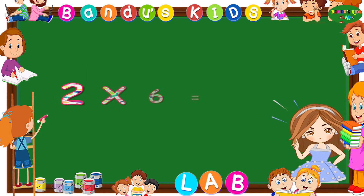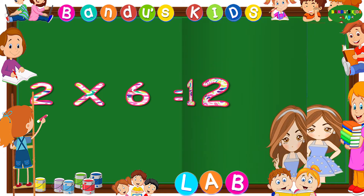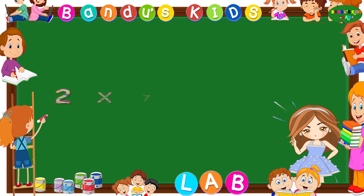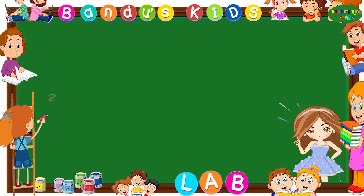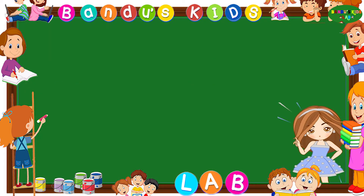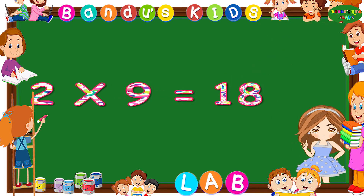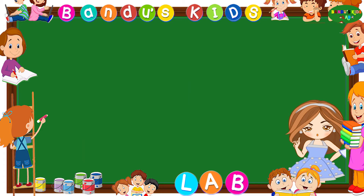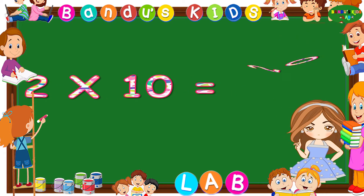Two sixes are twelve. Two sevens are fourteen. Two eights are sixteen. Two nines are eighteen. Two tens are twenty.